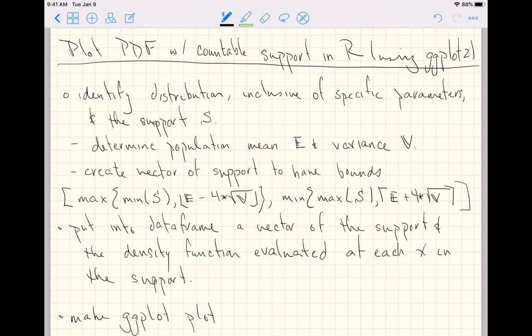On the far right side of this line, if you're familiar with a capital gamma or the backwards capital gamma surrounding the E plus 4 times the square root of E, those are symbols to say round the quantity in between those up. And R has a built-in function named ceiling. We'll find out soon.